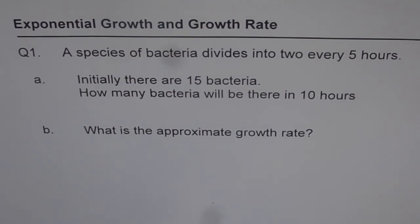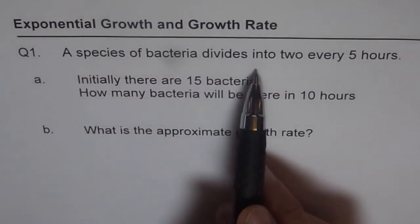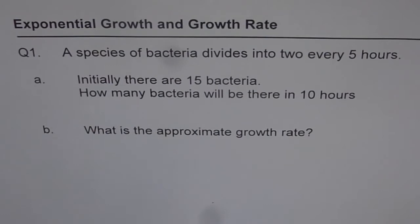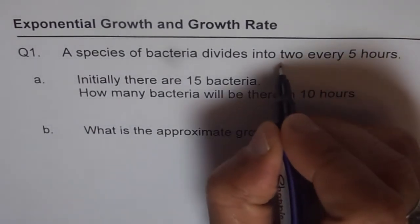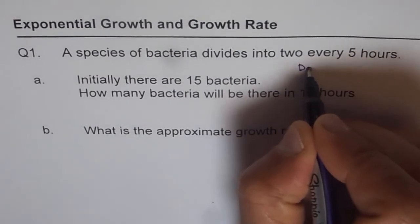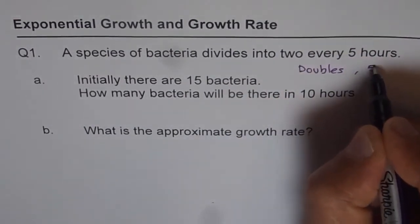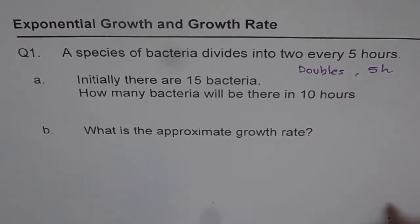Let's go through the question once again. It says species of bacteria divides into 2 every 5 hours. That means it doubles every 5 hours. So divides into 2 means doubles in 5 hours. So that is what we are given - the doubling rate.